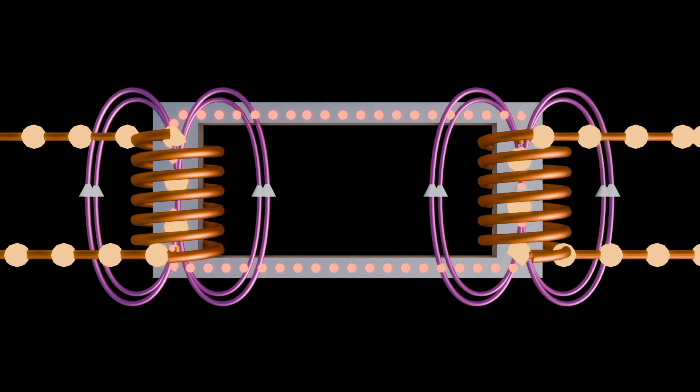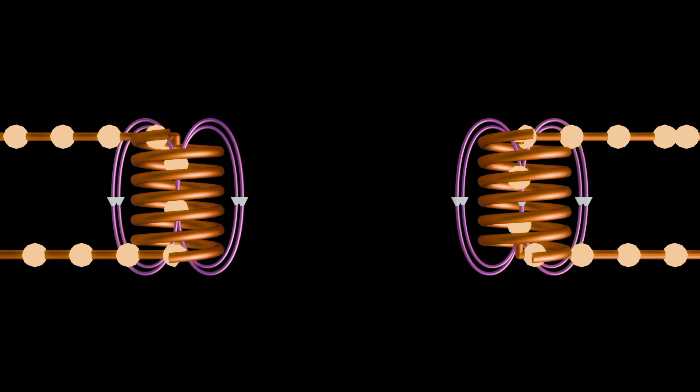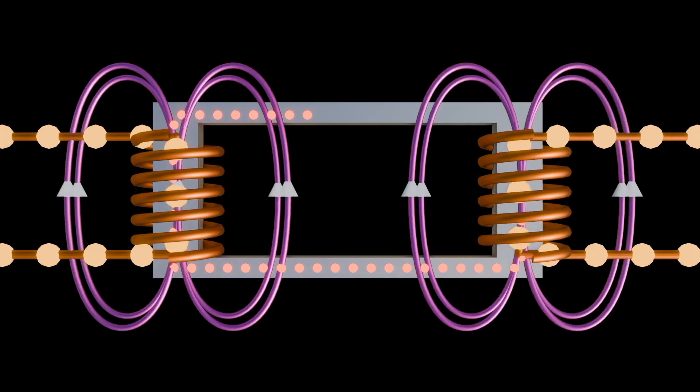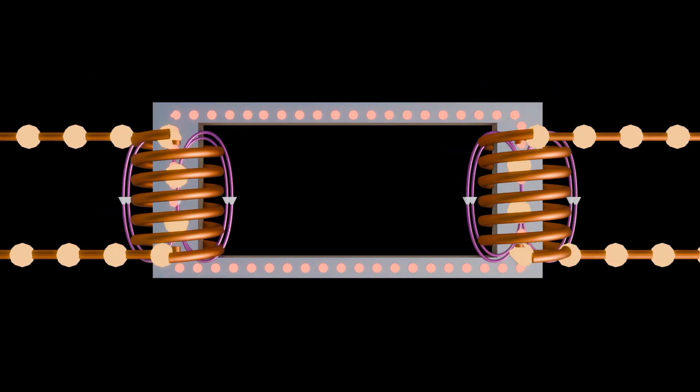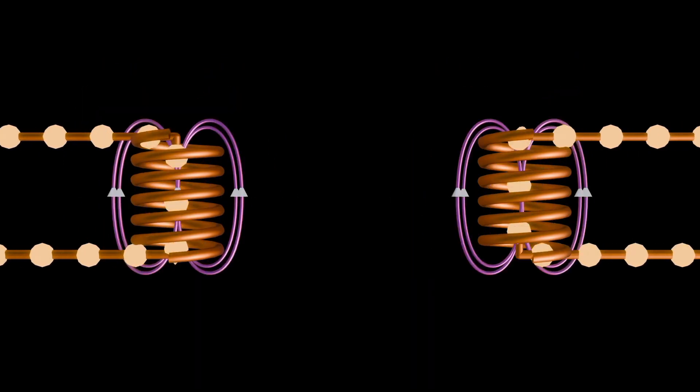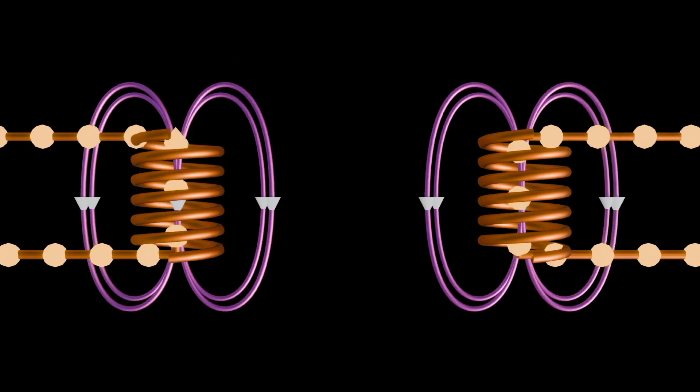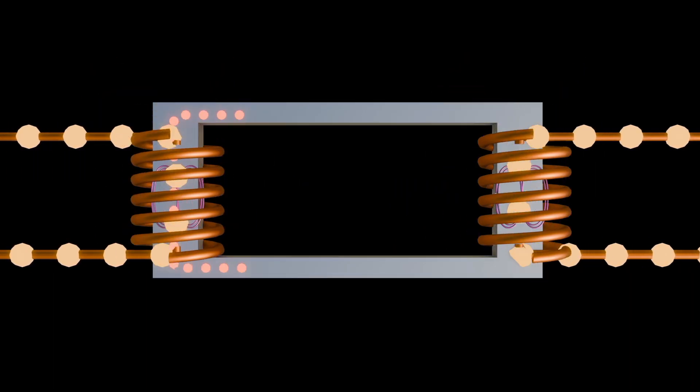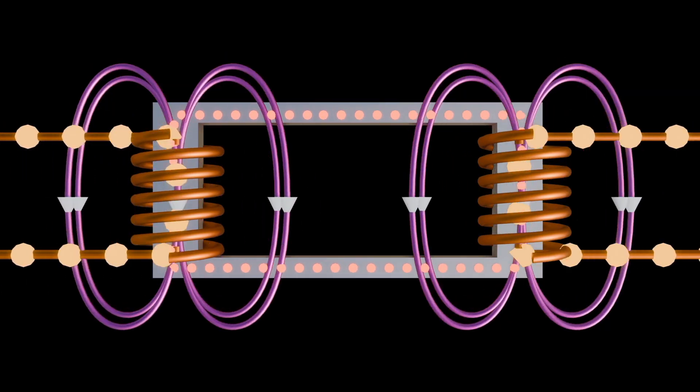The induced voltage in the secondary coil depends on the rate of change of magnetic flux linking the coil. When the same iron core is used for both primary and secondary winding, the changing magnetic field produced by the primary coils induces a voltage in the secondary coil through mutual induction.